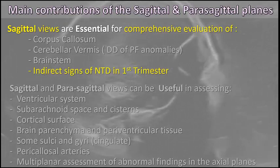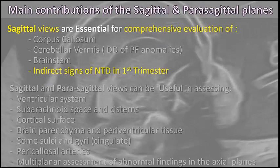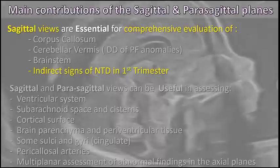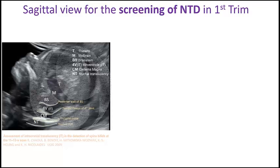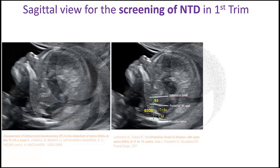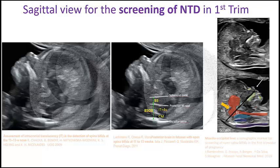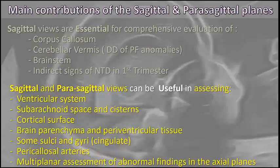In addition to the assessment of the corpus callosum, cerebellar vermis, and brainstem, the sagittal planes are also essential to detect indirect signs of neural tube defects in the first trimester — such as the intracranial translucency as described by Professor Chaoui, or the ratio between the brainstem and the brainstem-to-occipital bone distance, or the maxillooccipital line. So the sagittal views are also essential in the first trimester.